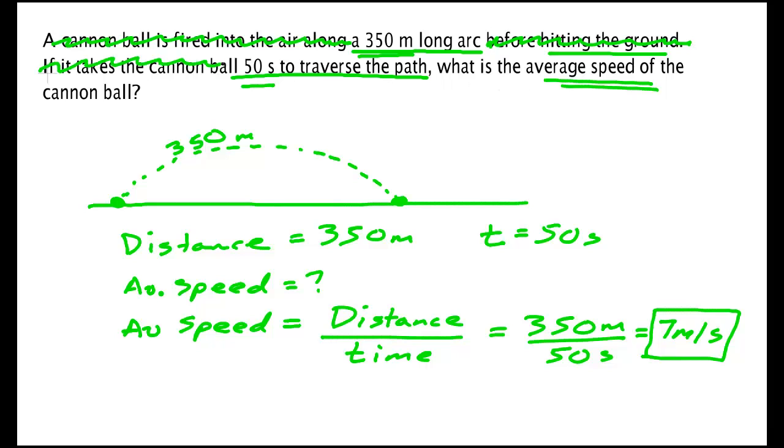Again, it didn't matter that it was a cannonball. We needed 50 seconds to traverse that path. I needed to know that 50 seconds is related to that 350 meters. I needed to know to find the average speed, and none of the rest of this was important either. Being able to learn to read word problems is identifying the important concepts that are in a problem. 350 meter arc takes 50 seconds, what's the average speed?